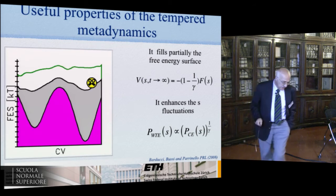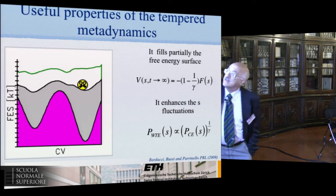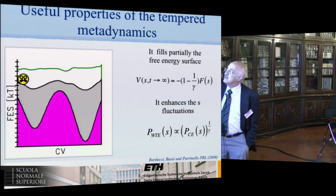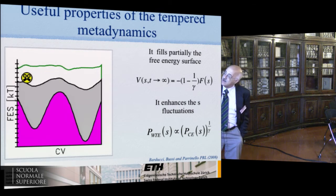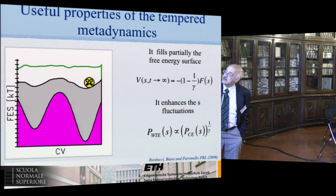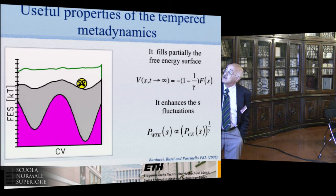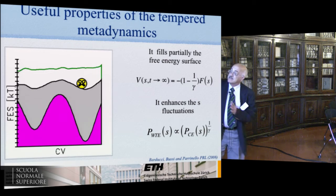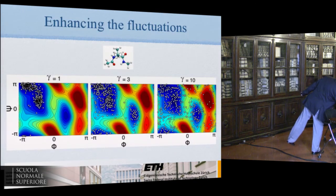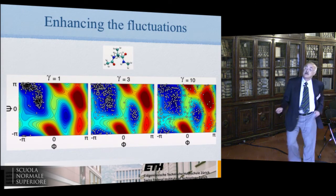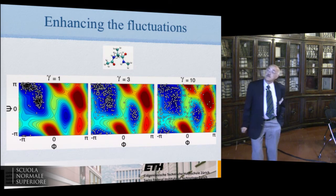The way I like to look at it is that I change the fluctuations in the variable s. You can show there is a relation between the fluctuations — the probability distribution in the canonical ensemble — and that in what we call the well-tempered ensemble. If I make gamma larger, the fluctuations will grow, and there is a way of inducing criticality.